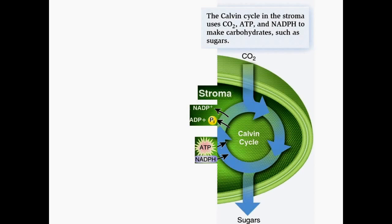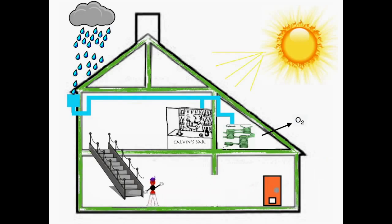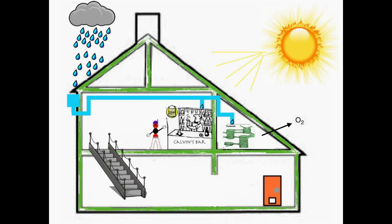Carbon dioxide enters through pores called stomata on the underside of the leaf, and when it enters the Calvin cycle, it eventually produces one molecule of glucose. The plant usually makes more glucose than it needs immediately, so the extra is stored until the plant needs it for growth or for food when it is too dark to perform photosynthesis.